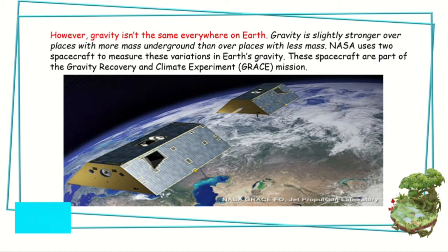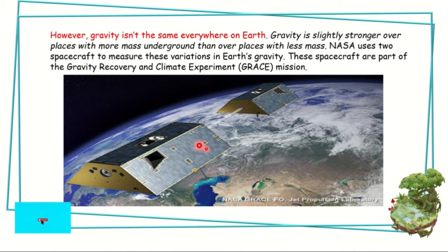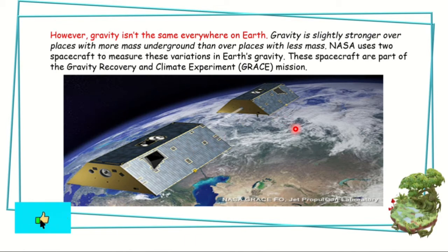However, gravity isn't the same everywhere on earth. There are places with what is called zero gravity, or where gravity is less. Gravity is slightly stronger over places with more mass underground than over places with less mass. NASA uses two spacecraft to measure these variations in earth's gravity. These spacecraft are part of the Gravity Recovery and Climate Experiment, or the GRACE mission.